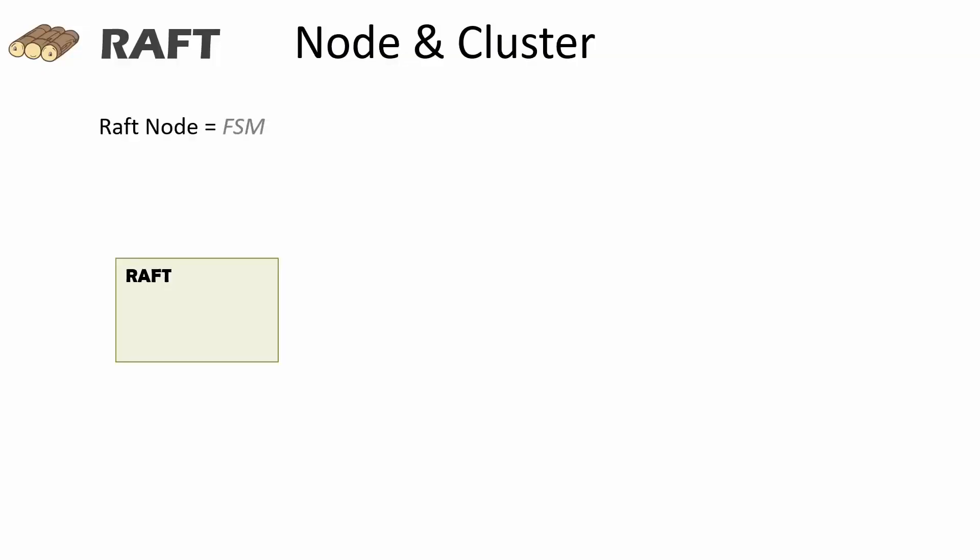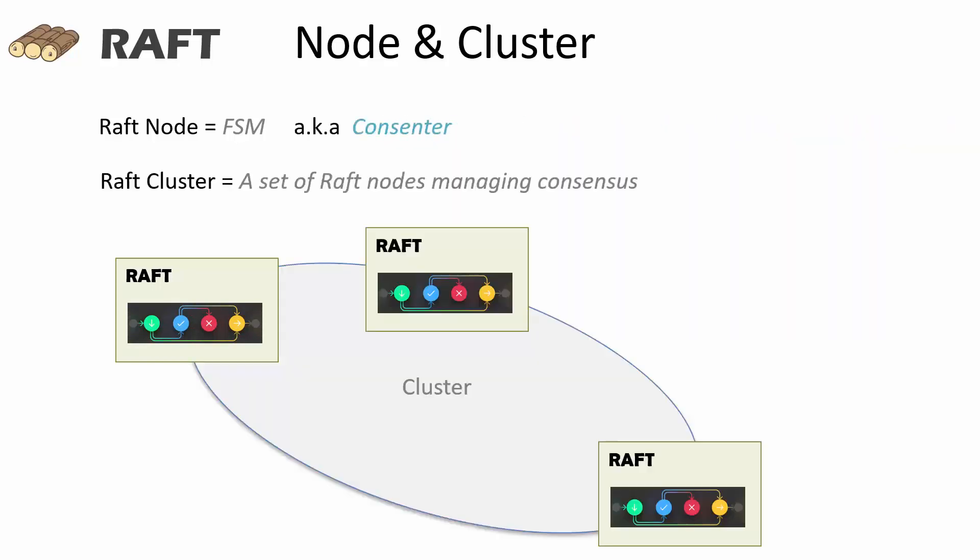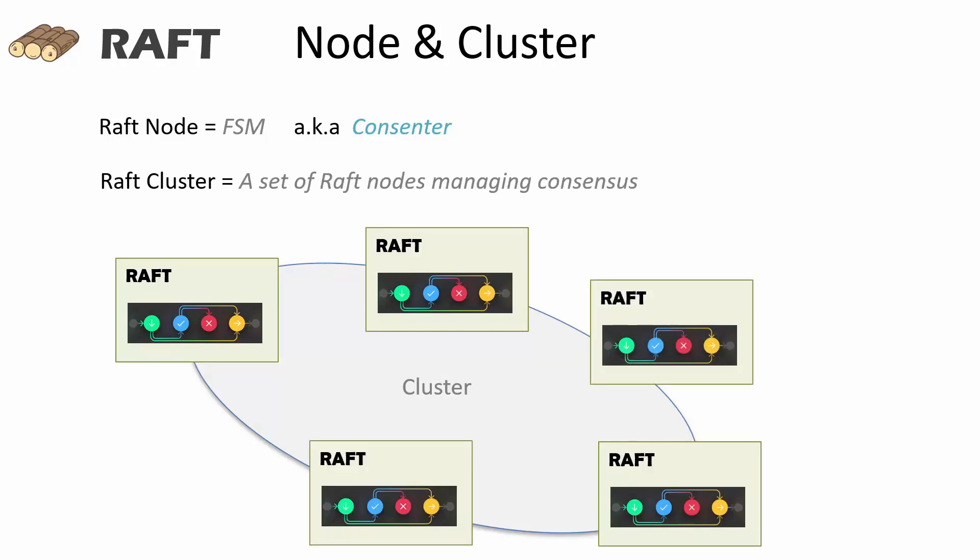A raft node may be thought of as a finite state machine. The raft node is also referred to as the consentor. A raft cluster consists of three or more raft nodes. The consensus in the cluster is managed by way of communication between the raft nodes in the cluster.